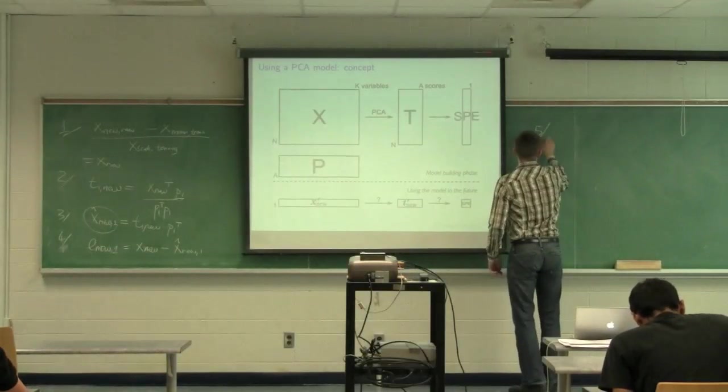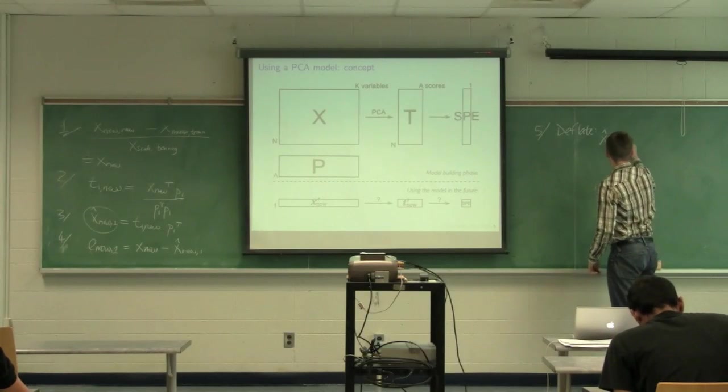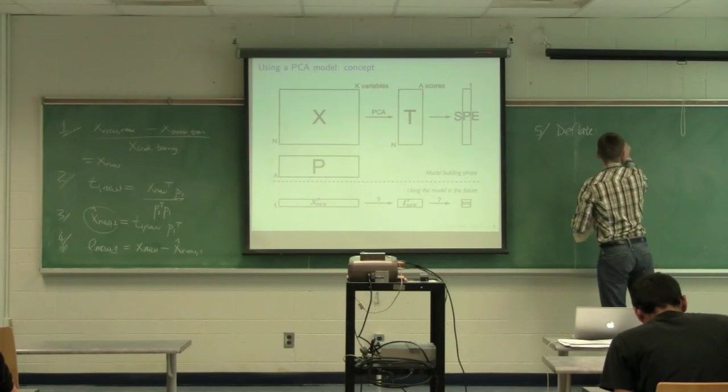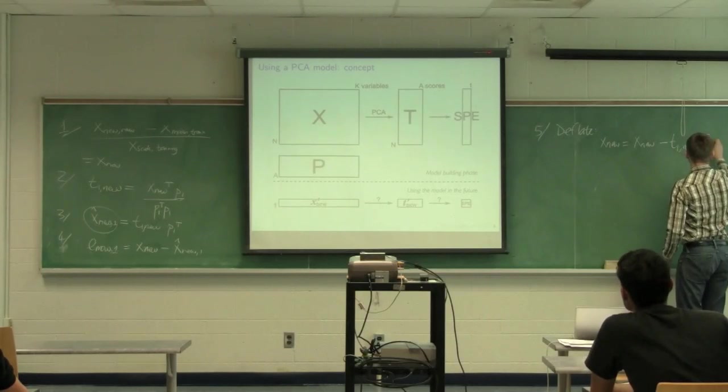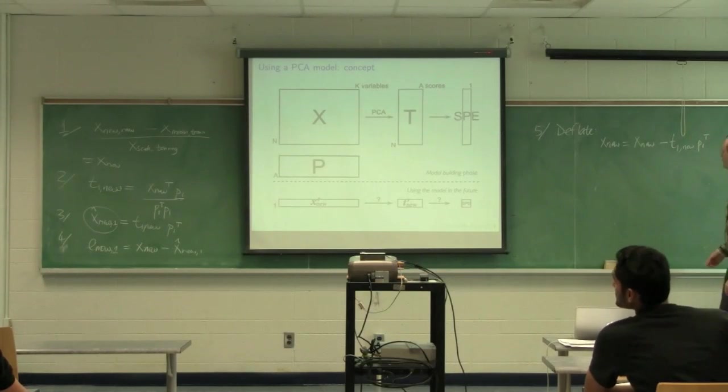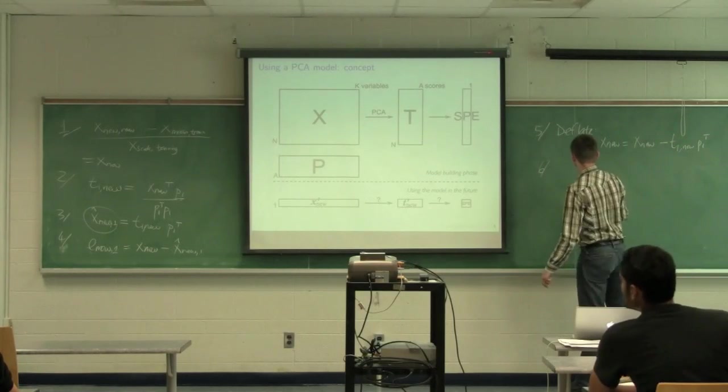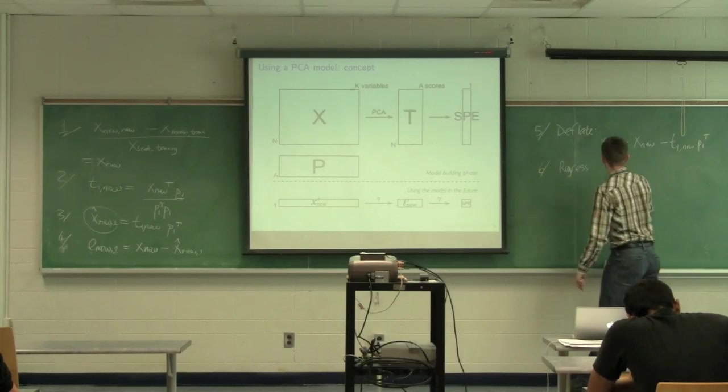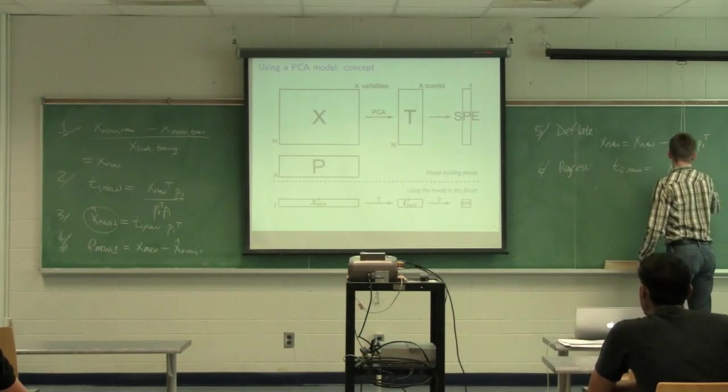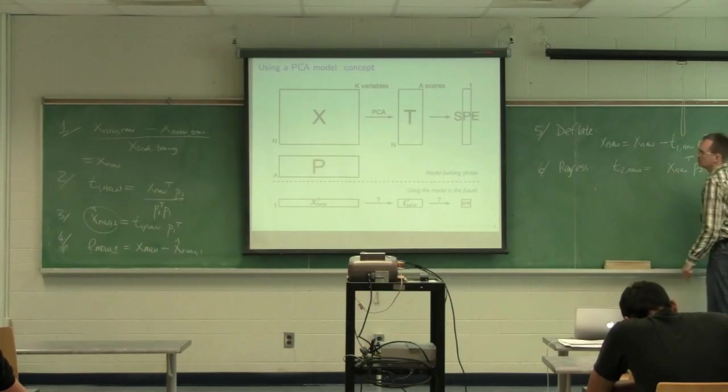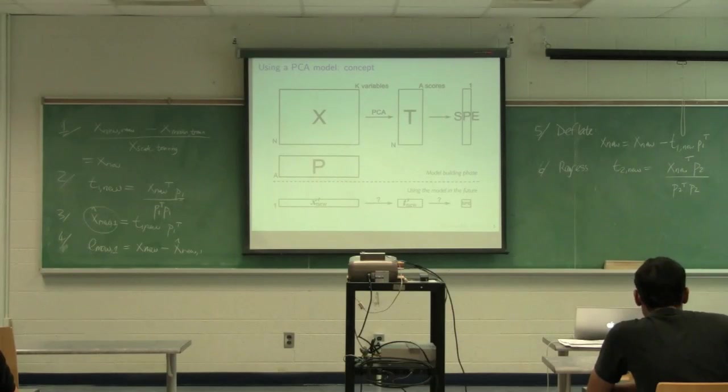Which says we're going to let x_new equal x_new minus t1_new p1 transpose, or basically x minus x_hat. And then we're going to calculate the second component by regressing this x_new vector onto the p2. So we're going to say t2_new is equal to x_new times p2 divided by p2 transpose p2. And then we're going to calculate the second component. And we proceed to the end of the components.